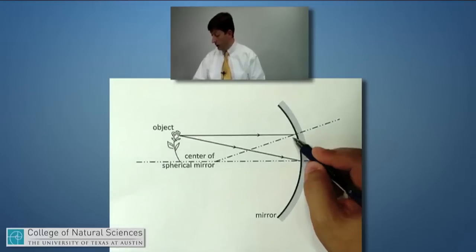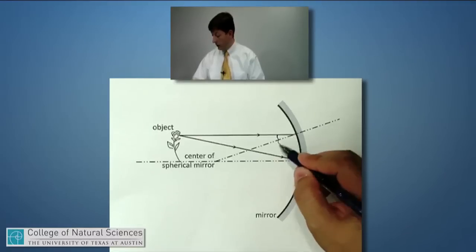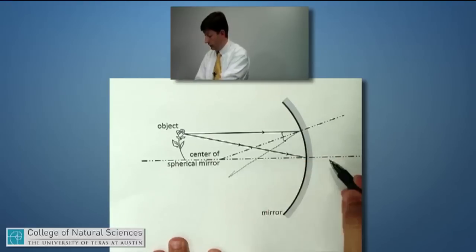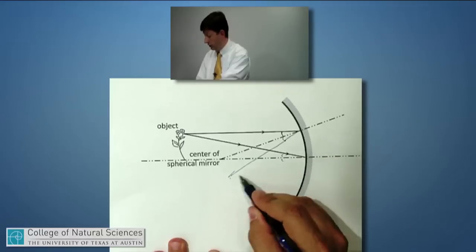Once again, if I have an incident angle like so, I should have a reflected angle like so, and the light ray should come somewhat like this. If I have an incident angle like so, I should have a reflected angle like so, and the light ray should come like this.